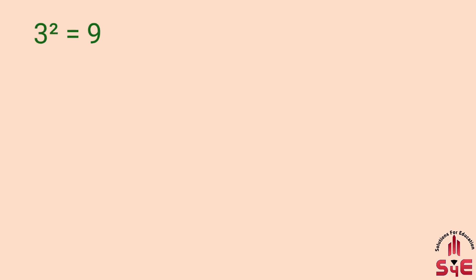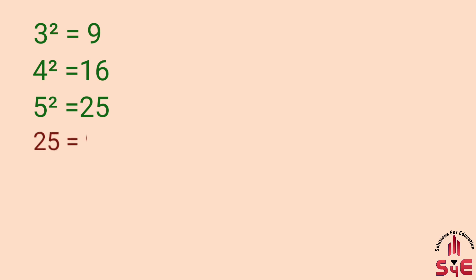3 का square 9 होता है, 4 का square 16 होता है, 5 का square 25 होता है, और 25 is equal to 9 plus 16 होता है। इसका मतलब ये हुआ कि 5² = 3² + 4². ये तीनों नंबर Pythagoras theorem को satisfy करते हैं, so 3, 4, 5 का ये group Pythagorean triplet हुआ।